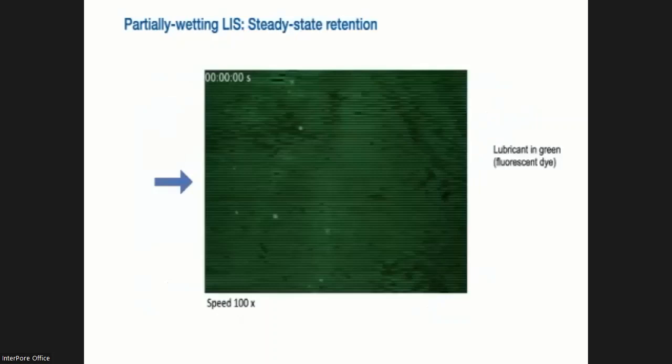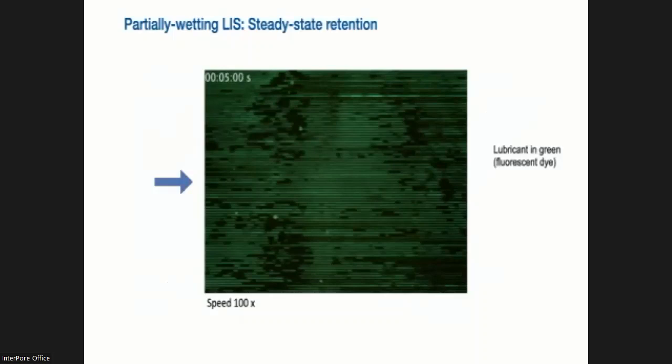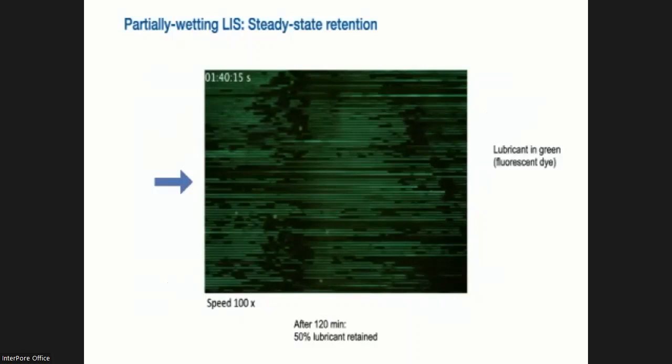Now, if we take again a look at how this corresponding surface behaves under turbulent flow, we see again that there is a de-wetting initially, similar to what we observed before. And there's some movement of these streaks or this lubricant droplets inside the surface. Now, if we fast forward, we see that we reach a steady state. So when we have a non-wetting or partially wetting lubricant, we can actually retain around 50% of the lubricant.